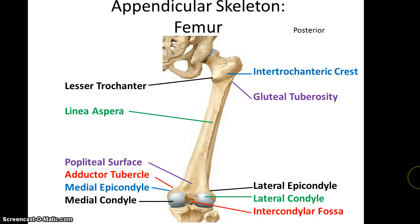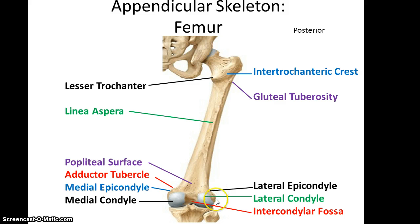At the distal end of the femur, on the medial side, there is a bump called the adductor tubercle, distal of which is the medial epicondyle, which then goes to the medial condyle. On the lateral side you have the lateral epicondyle going into the lateral condyle. Between the two condyles is the intercondylar fossa, and above that is the popliteal surface, which is basically the hollow of the back of the knee.